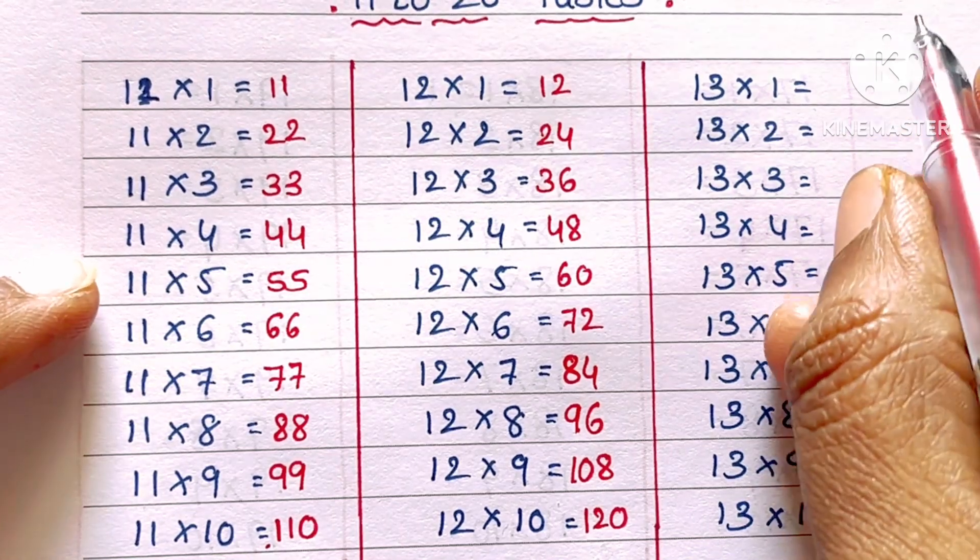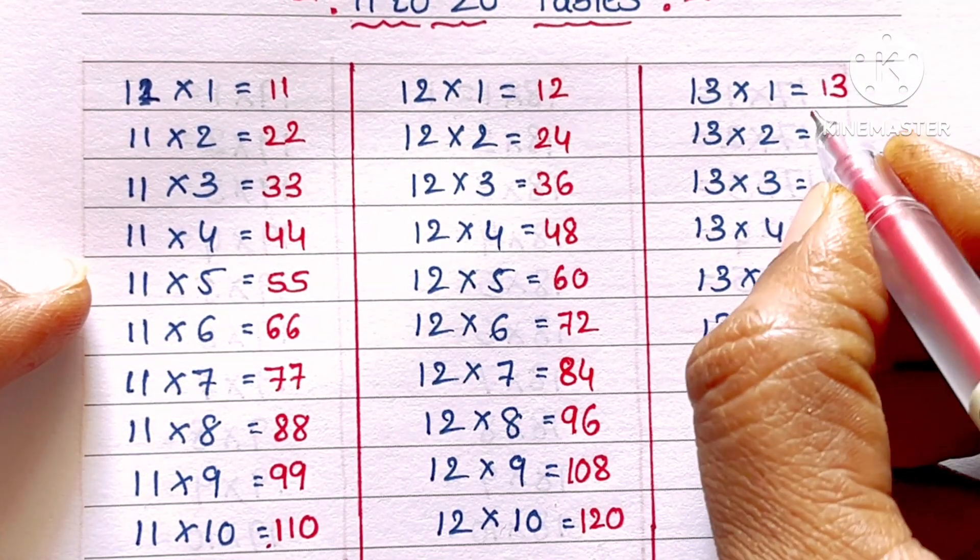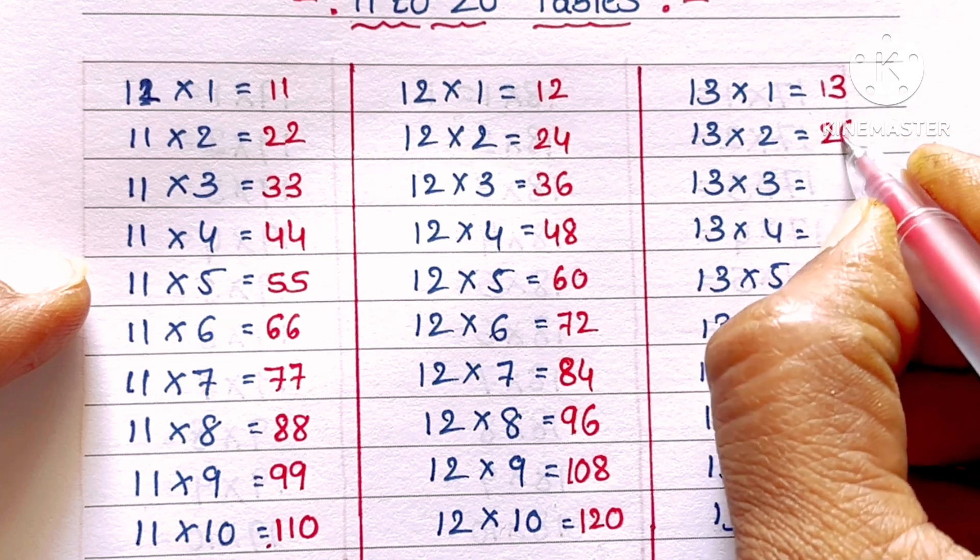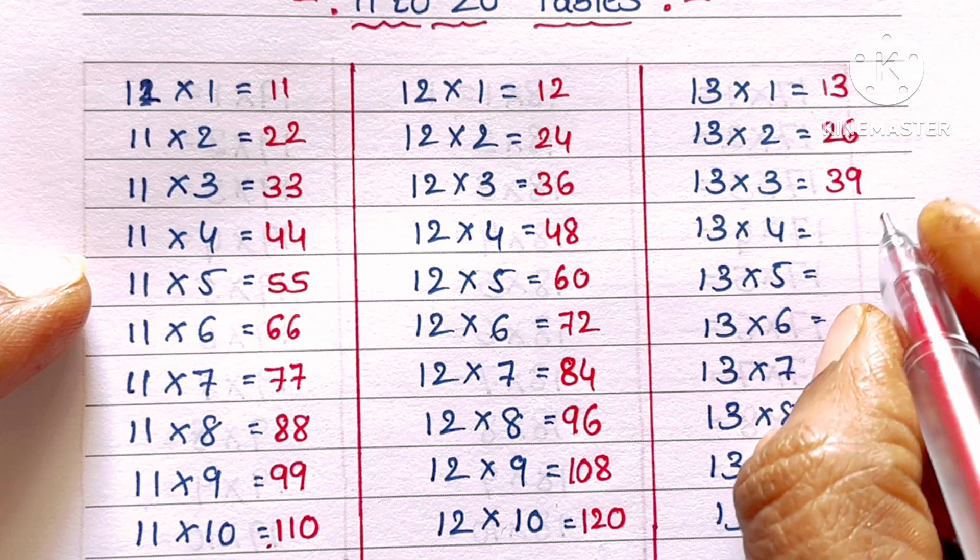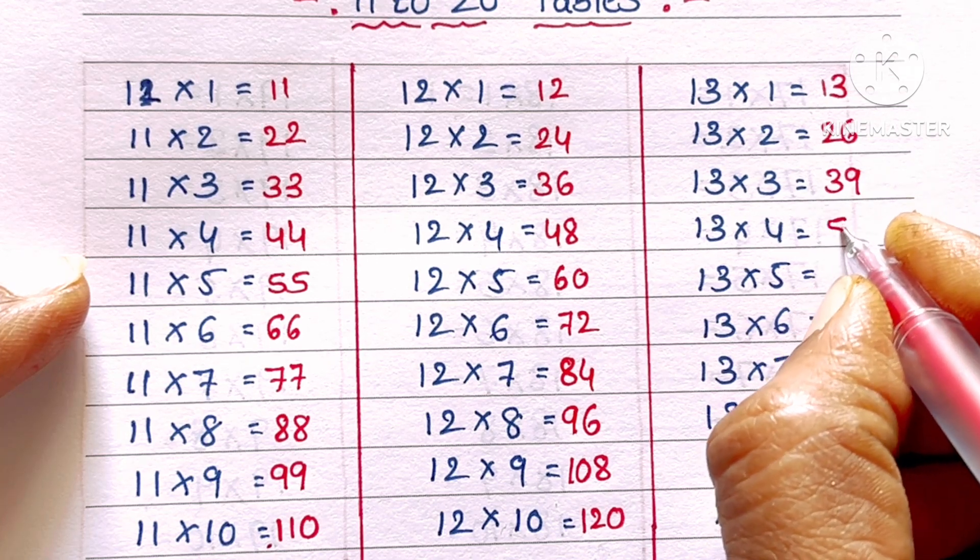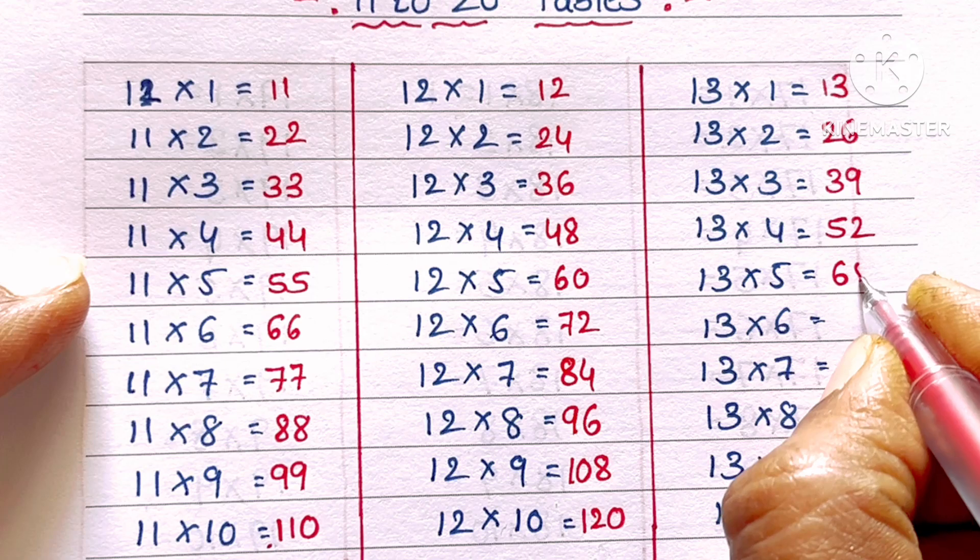13 ones are 13, 13 twos are 26, 13 threes are 39, 13 fours are 52, 13 fives are 65.